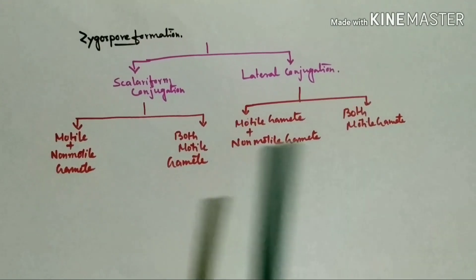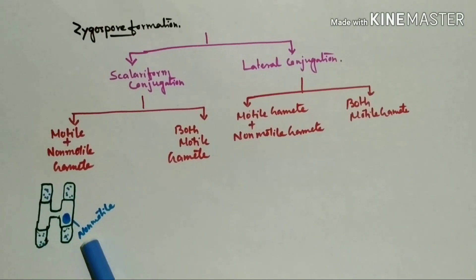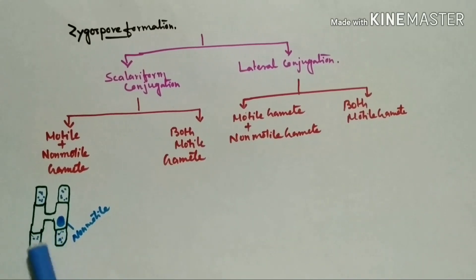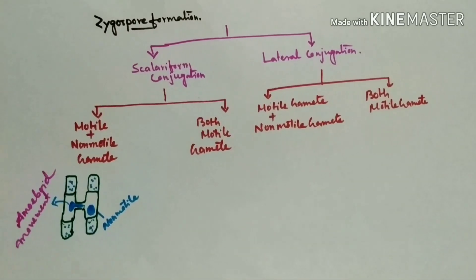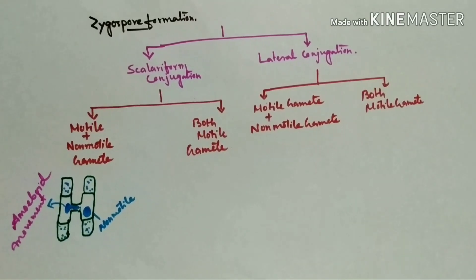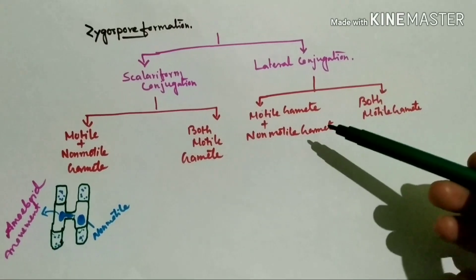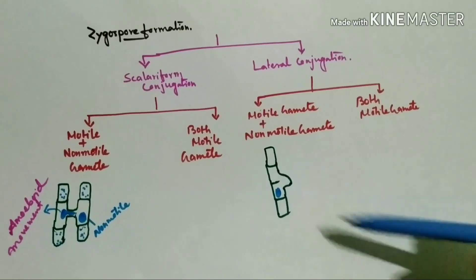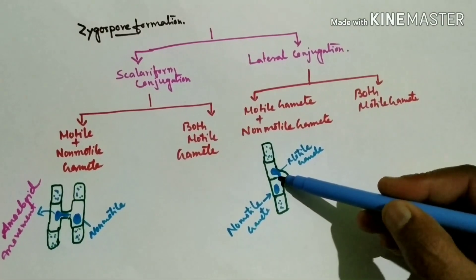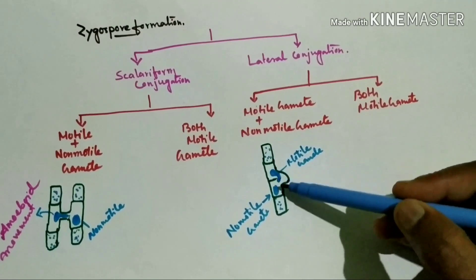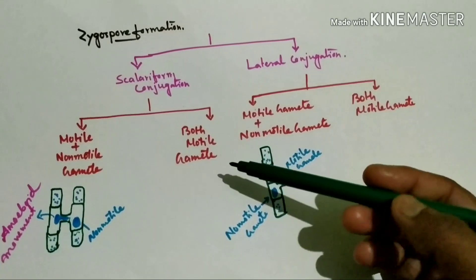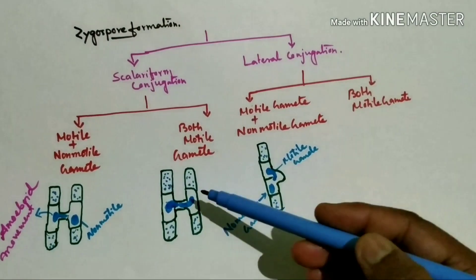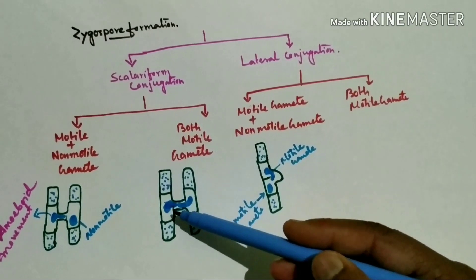Now in this case, this is non-motile gamete and here the motile gamete passes from this conjugation tube by amoeboid movement. Here also same: here non-motile gamete, here motile gamete, and this is amoeboid movement.